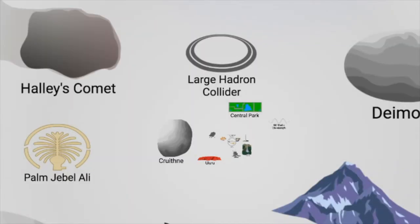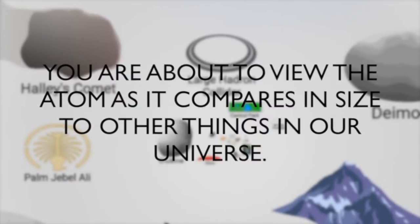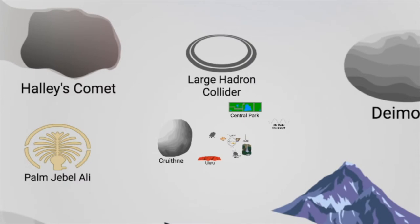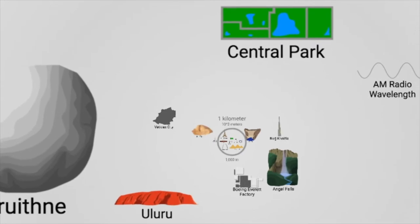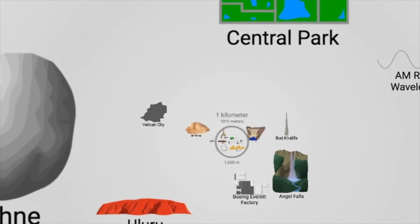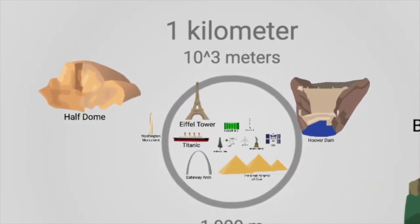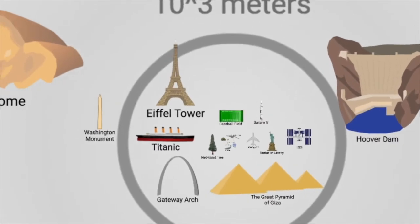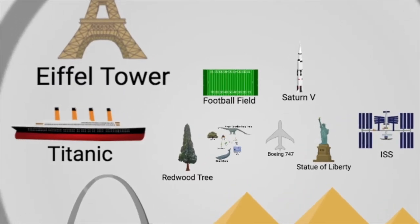Welcome to our understanding of the size of the atom. Here you're looking at a collection of objects or places with which you might be familiar. As we zoom in, approaching us in the upper right corner is Central Park. Zooming in further, we approach the circumference of 1,000 meters, with the Great Pyramid of Giza, the Statue of Liberty, the Eiffel Tower, the Titanic, and your average football field.